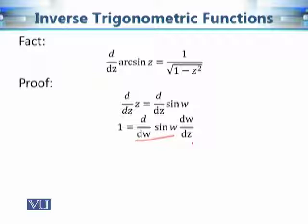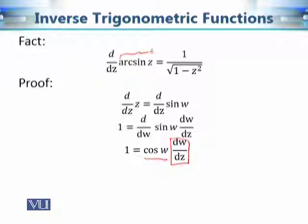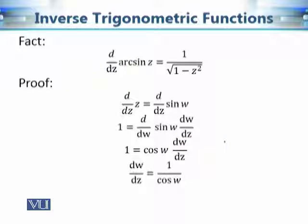The derivative of sine w with respect to w is cosine w, multiplied by dw/dz. Since we want to find dw/dz, we can write dw/dz equals 1 over cosine w.